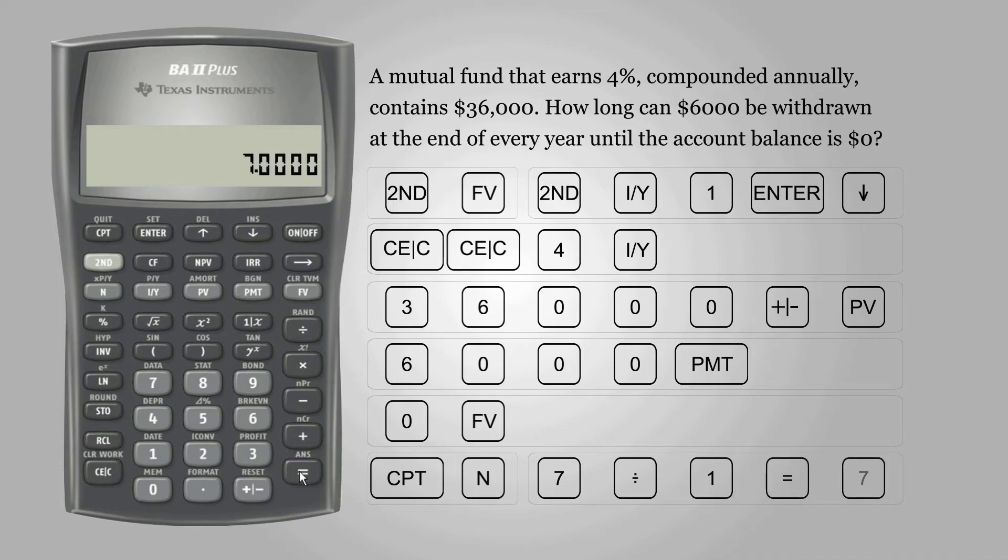Remember that when calculating for amortizations, the calculator doesn't automatically multiply the number of years by the PY value when a value is inputted for N. It also doesn't automatically divide the number of periods by the PY value when it calculates for N.